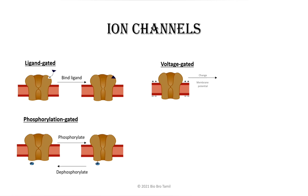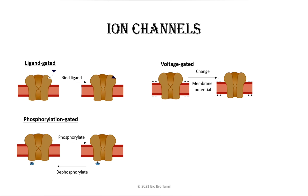If you look at the membrane potential, the charges are different — the opposite charges differ inside and outside. In the voltage-gated ion channel, positive charges are obtained from the outer and inner membrane automatically, responding to this voltage difference.